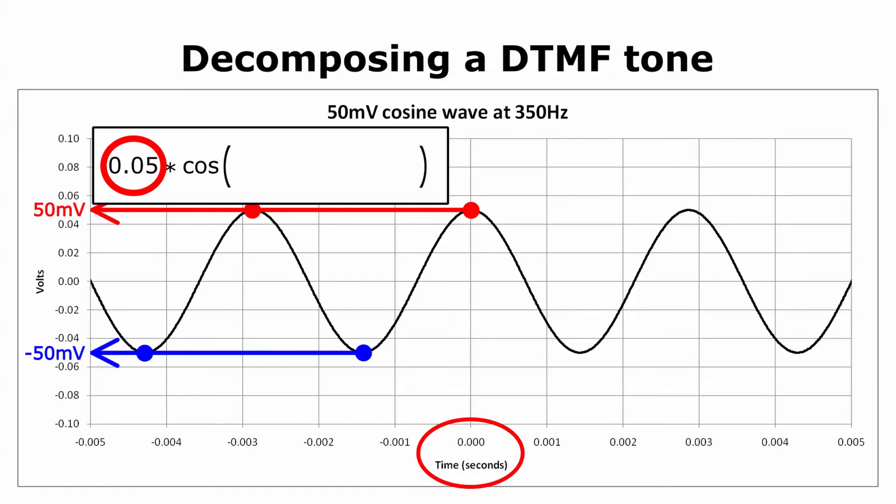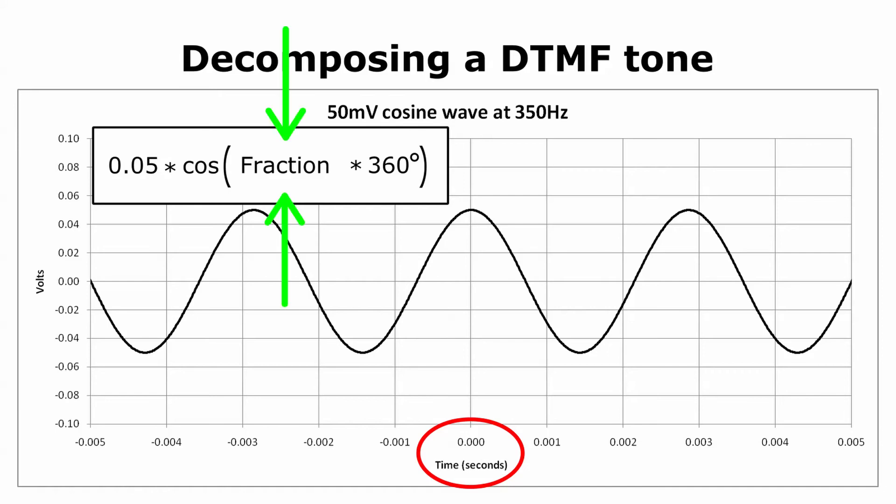We now have to find some way to set the frequency. A good place to start is to make the argument of the cosine function equal to some fraction multiplied by 360 degrees. Of course, we're going to have to figure out what this fraction should be. The fraction is going to have to depend on time, since we want the waveform to vary as time changes. The dashed blue line identifies time zero.